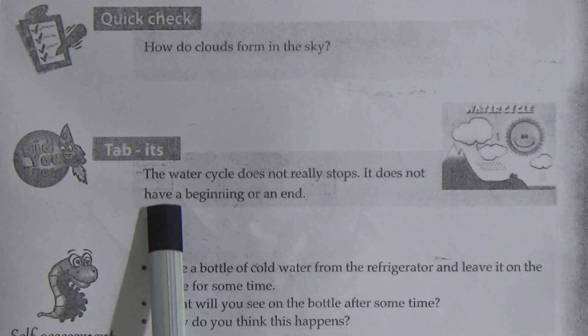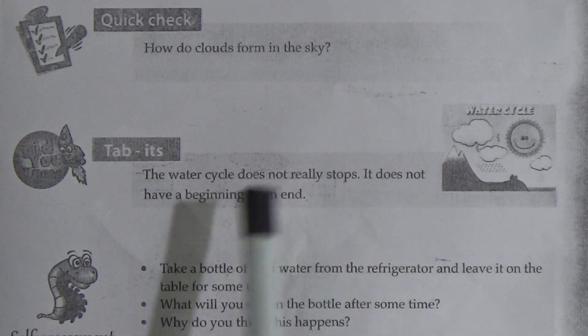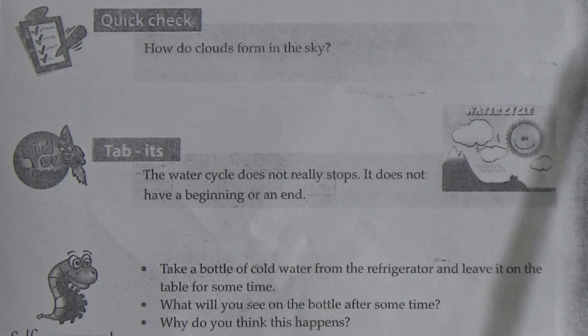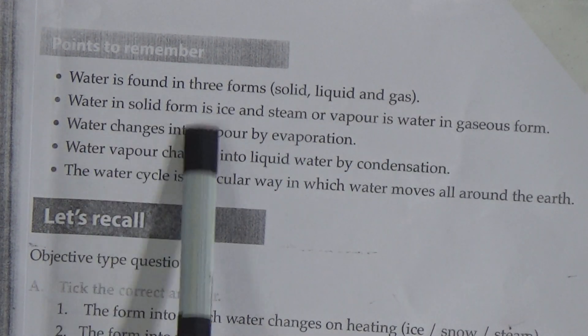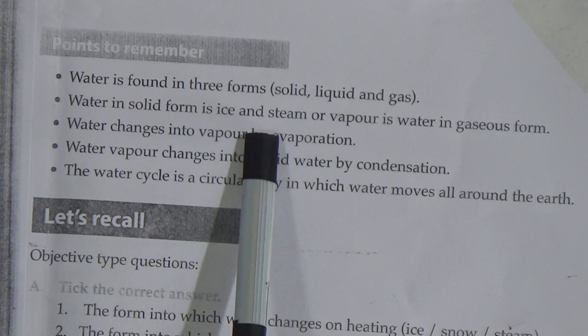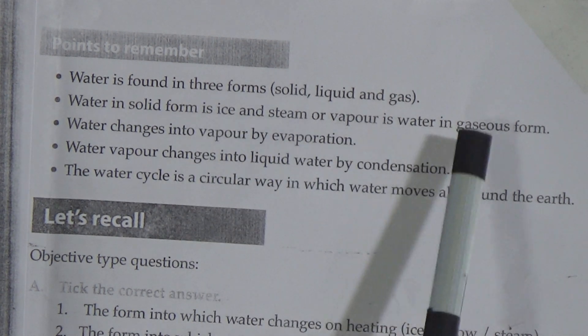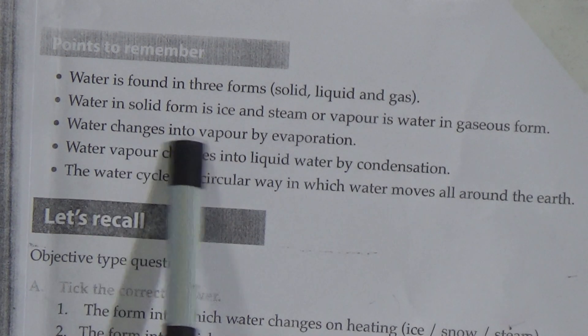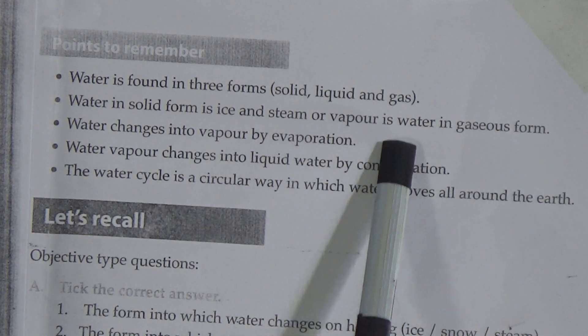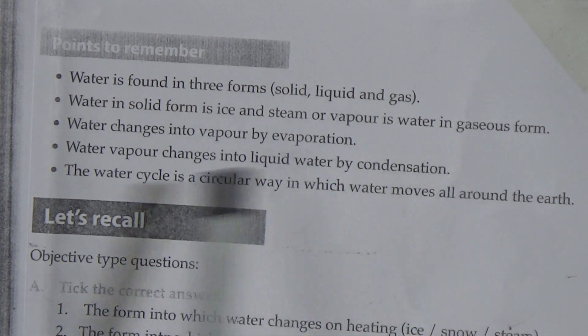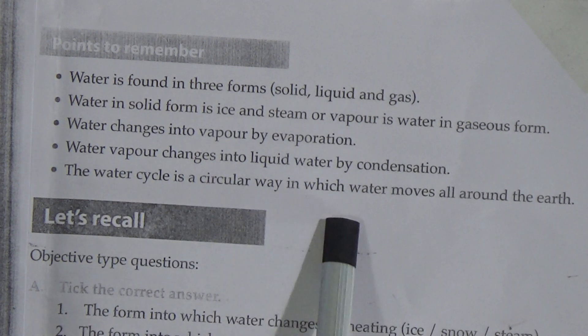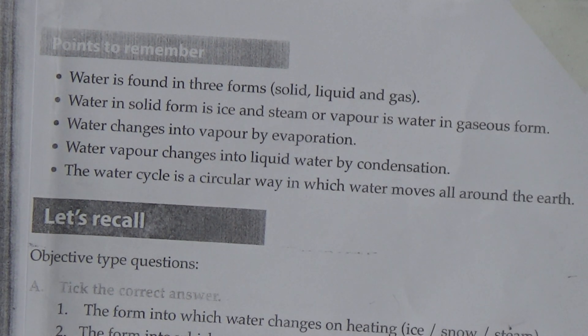The water cycle does not really stop. It does not have a beginning or an end. In this chapter, we read: water is found in three forms — solid, liquid, and gas. The solid form of water is ice. Steam or vapor is water in gaseous form. Water changes into vapor by evaporation. Water vapor changes into liquid water by condensation. The water cycle is the circular way in which water moves all around the earth.